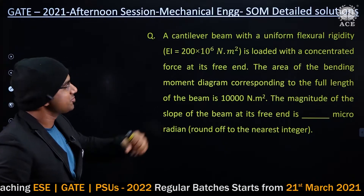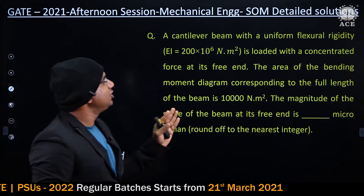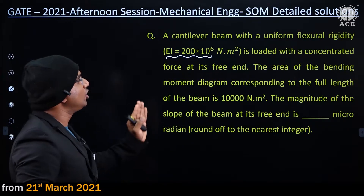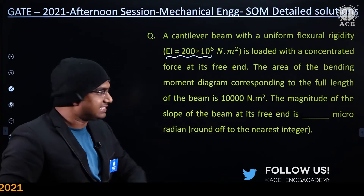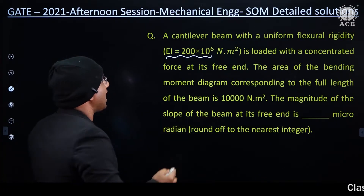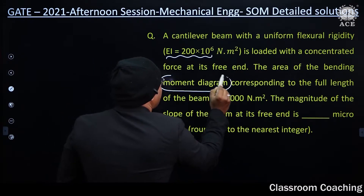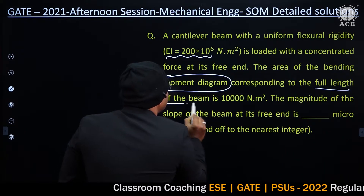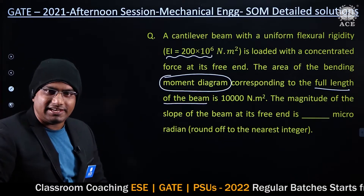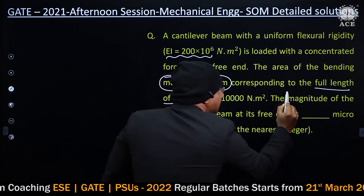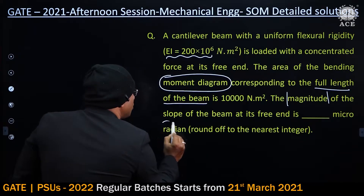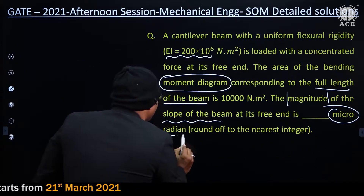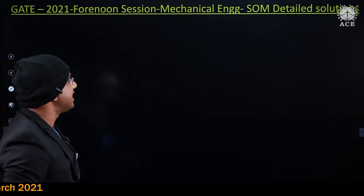Coming to the first question: a cantilever beam with uniform flexural rigidity — as clearly mentioned, flexural rigidity is directly given — is loaded with a concentrated force at its end. The area of the bending moment diagram corresponding to the full length of the beam is given as 10,000. It is asking for just the magnitude of the slope of the beam at its free end in terms of micro radians.